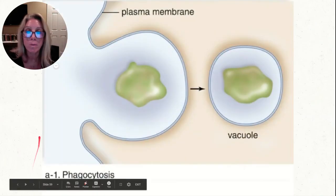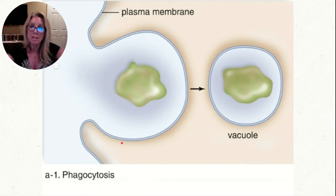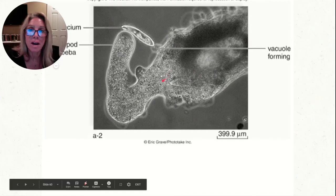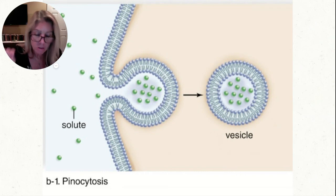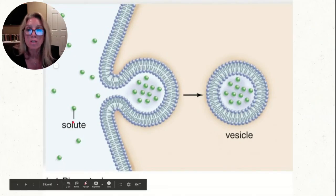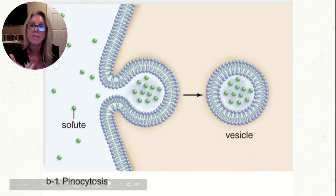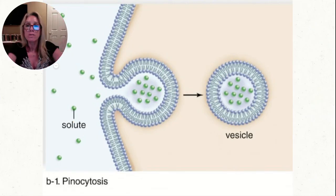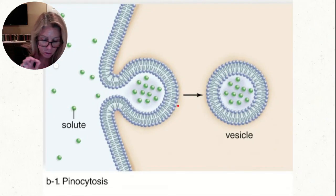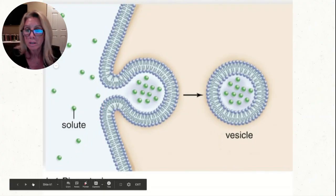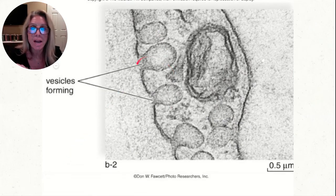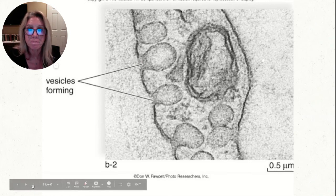Endocytosis has three types. Phagocytosis is cellular eating — engulfing large molecules, like a white blood cell eating a bacterium or an amoeba eating a paramecium. Pinocytosis is cellular drinking — bringing in fluid. That's used by plant root cells and also happens across some capillaries. This is active transport because you have to move your cytoskeleton to go out and engulf these things.